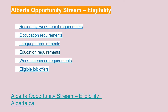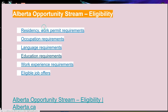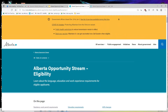Alberta Opportunity Stream eligibility criteria. Your eligibility will consist of: residency, work permit requirements, occupation requirements, language requirements, education requirements, work experience requirements, and eligible job offer requirements.